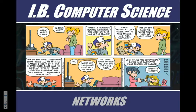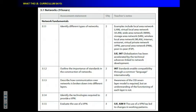Let's take a look at networking. Quickly, let's go over what the IB says about this — we looked at this a little bit last time. We have to identify different types of networks. This will include words like LAN, VLAN, and WAN — terminology that you need to be familiar with, because these words might show up on your exam.